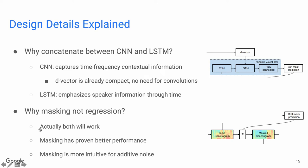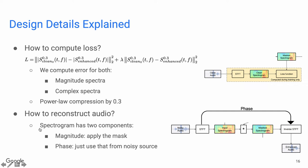We are doing masking, but that's not the only way. Many people use a regression network to directly output the enhanced spectrogram. We find masking is faster and has better performance, so we use masking instead of regression. For the loss function, we compute the L2 reconstruction loss for both the magnitude and the complex spectra. We also know that human hearing is nonlinear, so we use a power law compression of 0.3 to equalize the importance of quiet sounds relative to loud ones. When reconstructing the enhanced audio, we use the masked magnitude and directly use the phase of the noisy input without any processing.